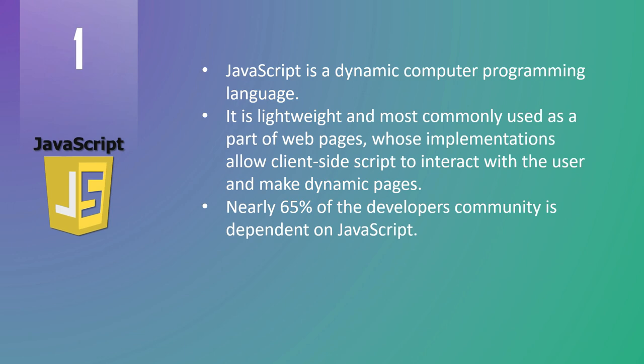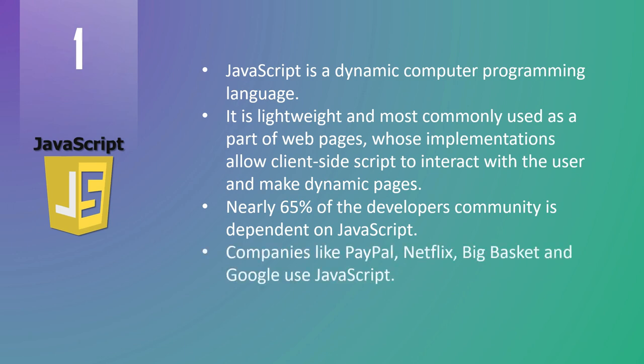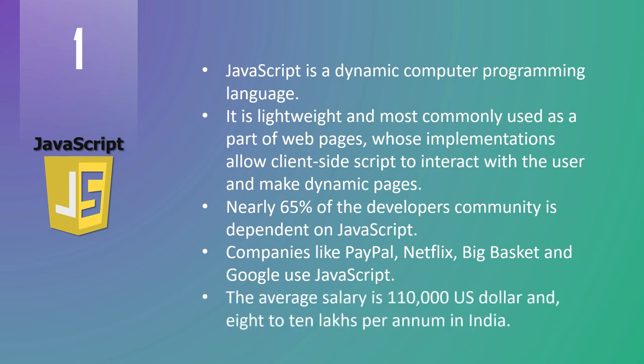JavaScript is a general-purpose scripting language extensively used for web application development. It is an interpreted programming language with object-oriented capabilities, capable of handling both front-end and back-end to deliver interactive web pages. Major tech giants like PayPal, Netflix, Big Basket, and Google use JavaScript. The average salary of a JavaScript developer is $110,000 US dollars and 8 to 10 lakhs per annum in India.